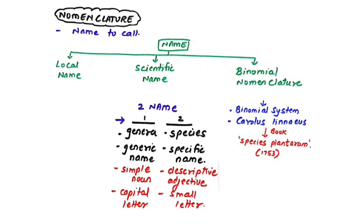Carolus Linnaeus, the father of taxonomy, wrote the book Species Plantarum in 1753, in which he introduced binomial nomenclature. Every organism has two names: the first is the genus (generic name) and the second is the species (specific name). For example, Mangifera indica — 'Mangifera' is the genus and 'indica' is the species. The genus is a simple noun and species is a descriptive adjective — 'indica' stands for India.